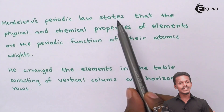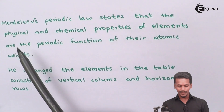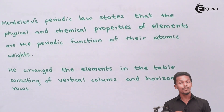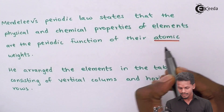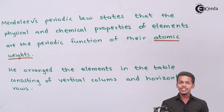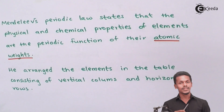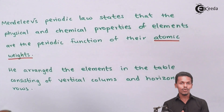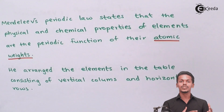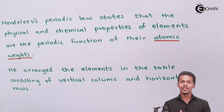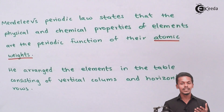Mendeleev's periodic law states that the physical and chemical properties of elements are the periodic functions of their atomic weight. So the similarities in chemical and physical properties among elements were due to their atomic weights, and based on this he formulated his law concerning atomic weight in relation to chemical and physical properties of elements.